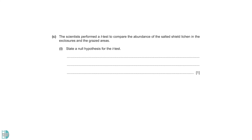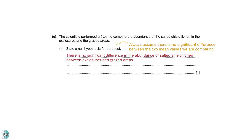The scientists perform a t-test to compare the abundance of the salted-shield lichen in the two areas. State a null hypothesis for the t-test. We always make a null hypothesis saying there is no significant difference between the two mean values being compared. So the null hypothesis in this case is that there is no significant difference in the abundance of salted-shield lichen between exclosures and grazed areas.